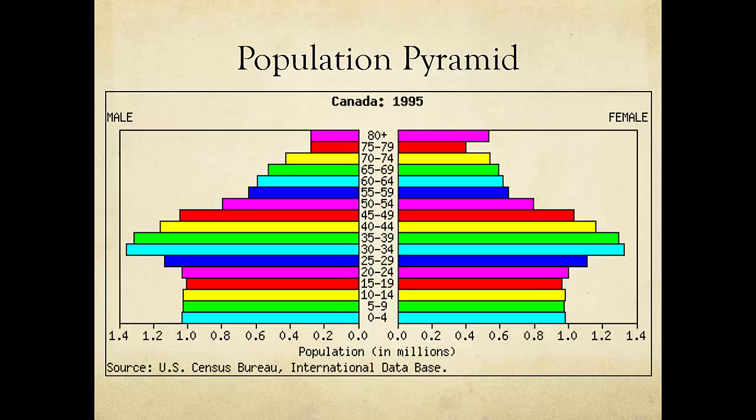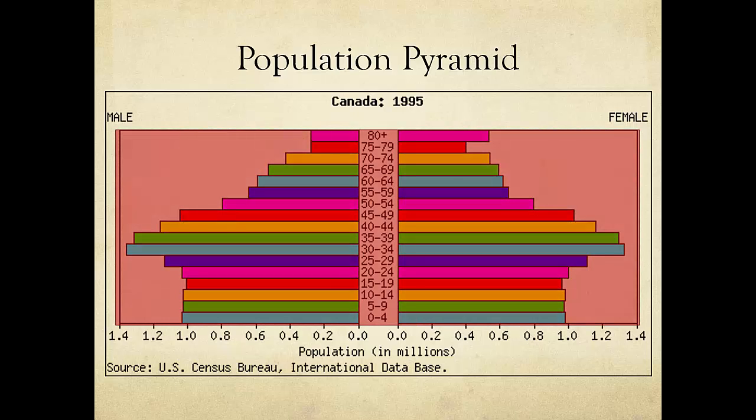So let's review. A population pyramid is a graph that shows the number of people in a particular place, usually a country, at a particular time. The people in that place are organized by sex and age group. Population pyramids help geographers understand the population's age distribution.